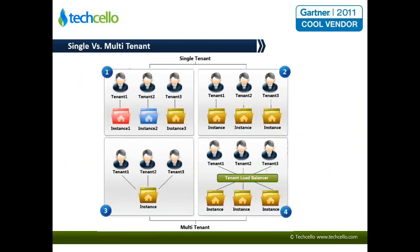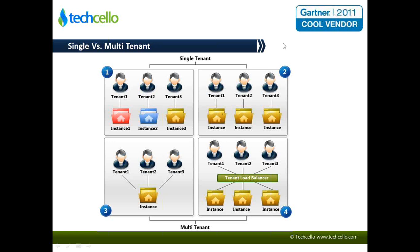This is a typical approach comparing single and multi-tenant scenarios. In the traditional model, the first two boxes — one and two — fall under the category of single-tenant. And three and four fall under the category of multi-tenant.